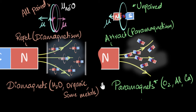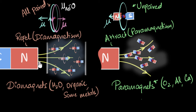Let's differentiate between diamagnetism and paramagnetism. First, diamagnetism repels and paramagnetism attracts. Second, diamagnetism works on paired electrons while paramagnetism works on unpaired electrons. In diamagnetism, temporary dipoles are induced in the opposite direction — once you remove the magnet, the dipoles are gone. In paramagnetism, you have permanent dipoles that turn and align due to the magnetic field.